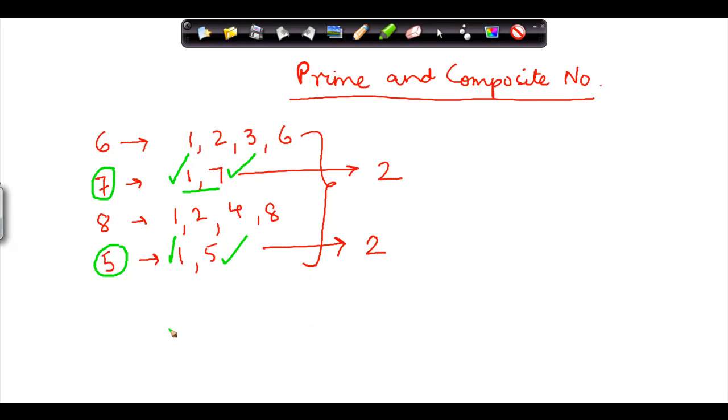So a prime number is basically a number which has 2 factors. And what are these 2 factors? 1, the numeral 1, and the other one is the number itself.